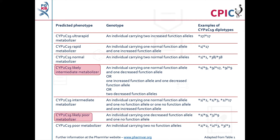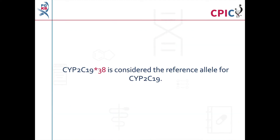CYP2C19 decreased function alleles are poorly characterized, and so the size of their impact on CYP2C19 function and drug metabolism is not well understood. As a result, patients carrying decreased function alleles are assigned as either a likely intermediate metabolizer or a likely poor metabolizer. The use of the term 'likely' indicates that there is uncertainty in the phenotype assignment, but that it is still reasonable to use the recommendations for the confirmed phenotype.